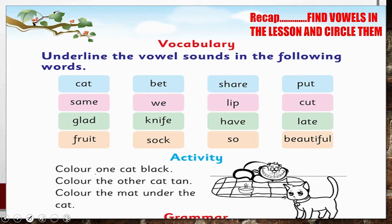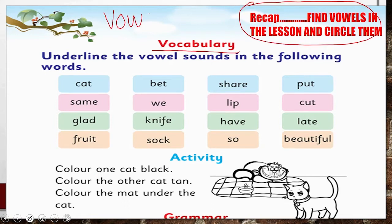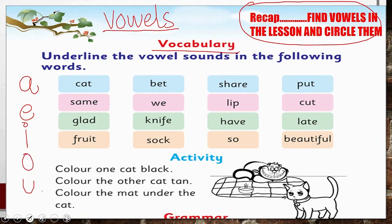Hum thudha sa recap karenge vowels ka. Mujhe umeed hai ke aapko vowels yaad honge, lekin hum ek dafaa phir repeat kar lete hain. There are five vowels: A, E, I, O, U.